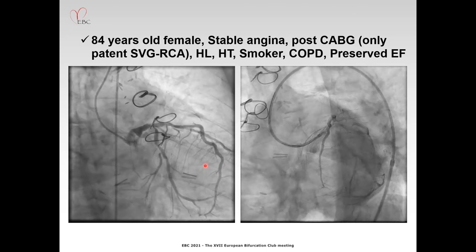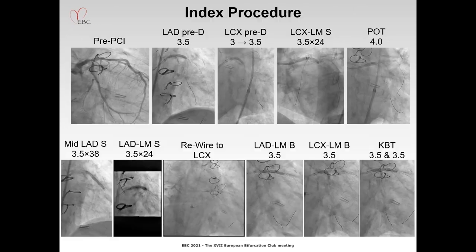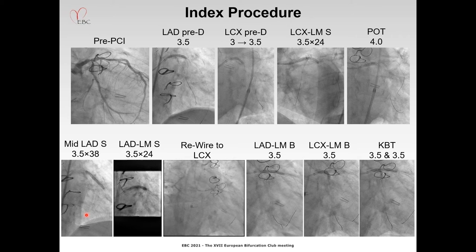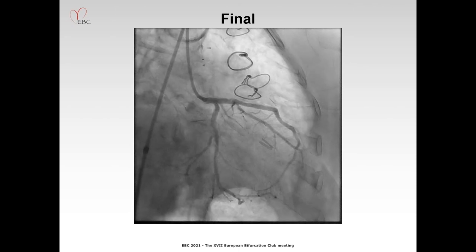The index procedure sequence: pre-dilatation in the LAD and circumflex ostium, then circumflex-to-left-main stent 3.5×24mm, and POT performed using a 4.0mm balloon. After rewire, the mid-LAD was stented 3.5×38mm, then LAD-to-left-main stent 3.5×24mm. Wiring into the circumflex, then LAD-left-main ballooning, then circumflex-left-main ballooning, and kissing using 3.5×35mm. This is how the final picture looks.